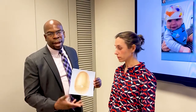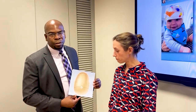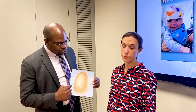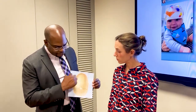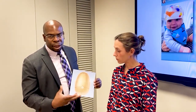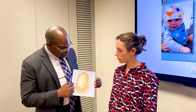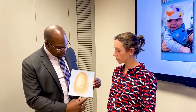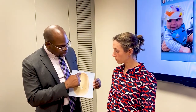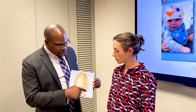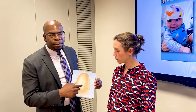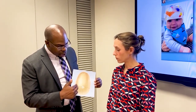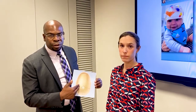So oftentimes we can diagnose craniosynostosis based primarily on physical examination, because when the sutures fuse, we get these characteristic pathologic head shapes. As Dr. Auckland was saying, when the sagittal suture fuses, we get this elongated head that has a narrowing in the back and bossing in the front. This is referred to as scaphocephaly, and this is usually pathognomonic of sagittal craniosynostosis.